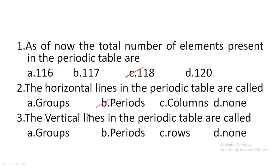Next one: the vertical lines in the periodic table are called — option A: groups, option B: periods, option C: rows, option D: none of the above. Vertical lines are nothing but groups. Hence, option A is the correct answer.